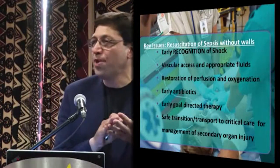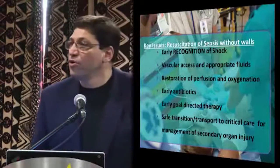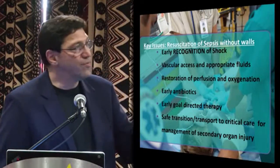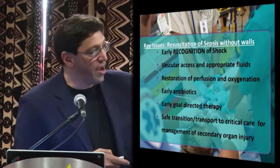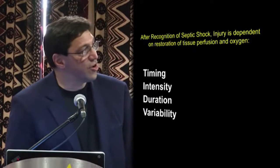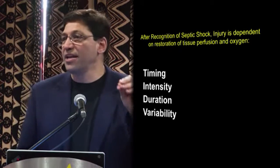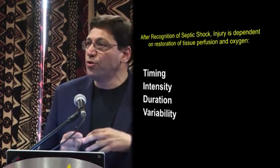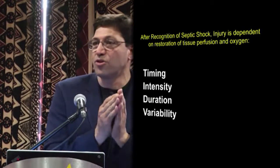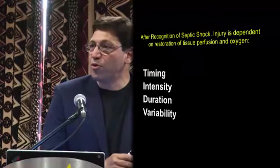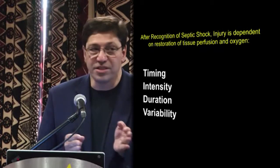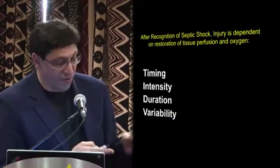If we look at these principles that permeate whatever sepsis guidelines you follow, nothing is ever mentioned about the location of that care — whether ICU, ER, home, or community center. We just need to figure out a way to get this type of care delivered. In every sepsis report you look at, the timing, intensity, duration, and variability of care for that particular entity plays a critical role. Where we are on the spectrum of the septic process should define the interventions — one protocol is not going to fit every situation. We have to titrate to the timing, intensity, duration, and variability of the septic event itself.